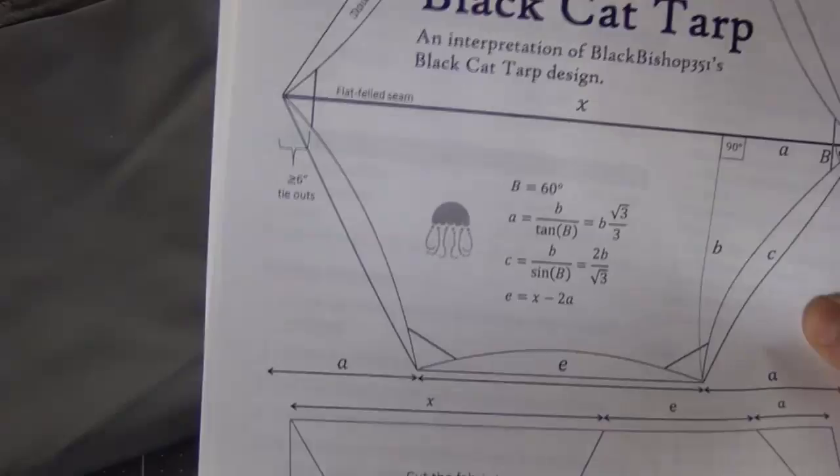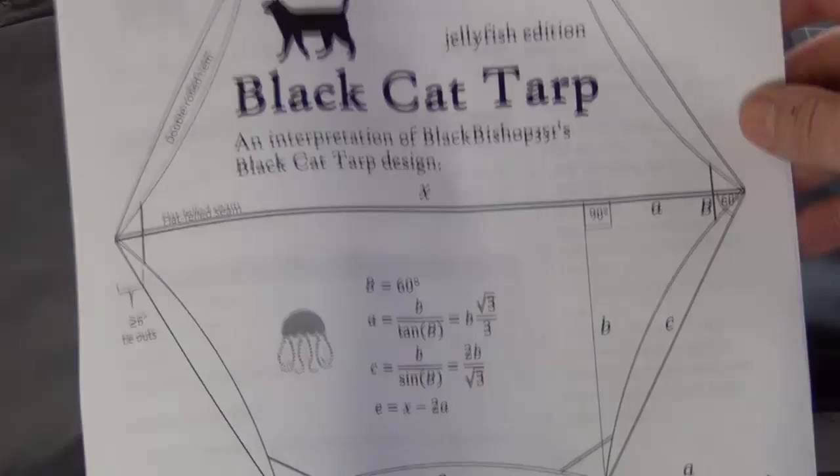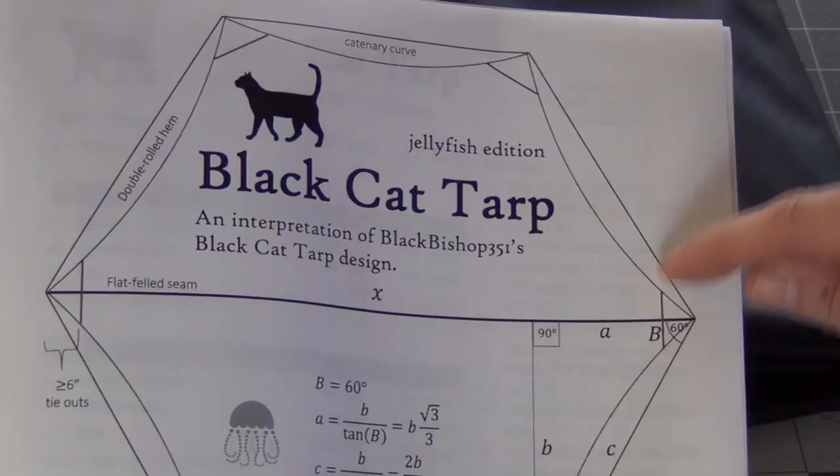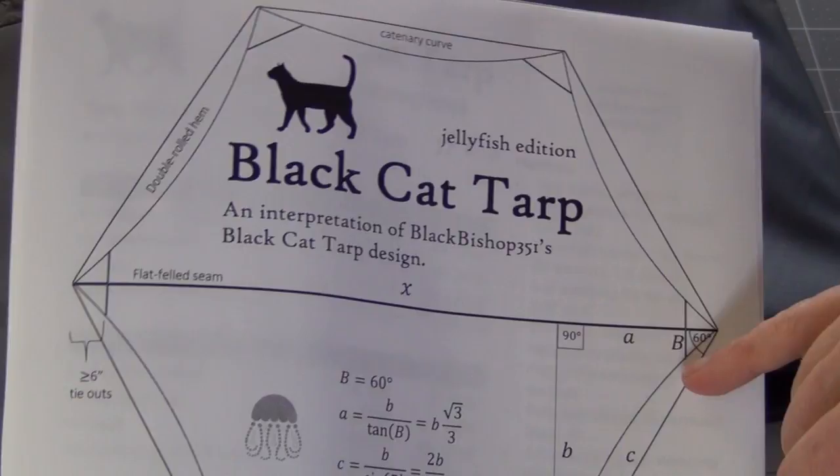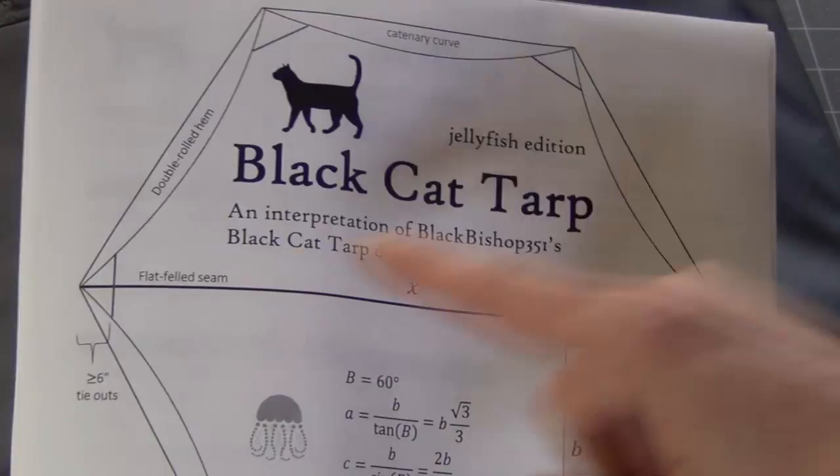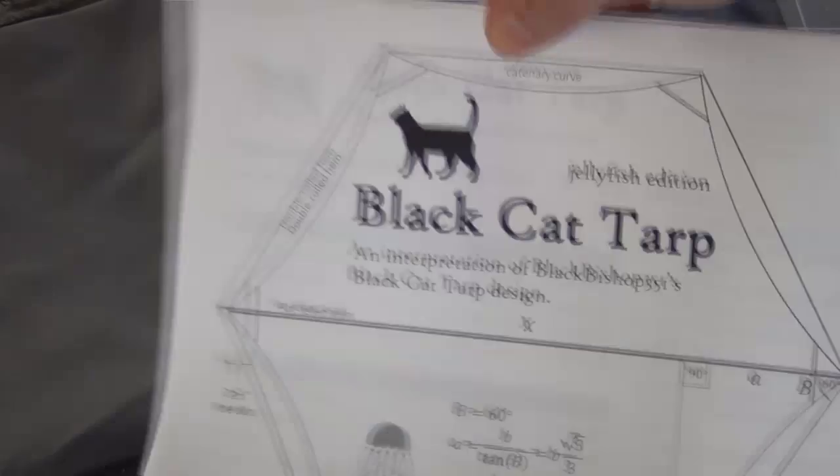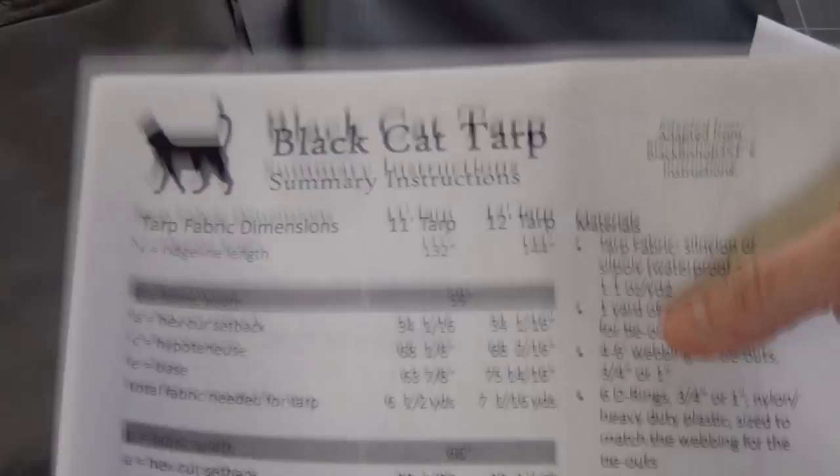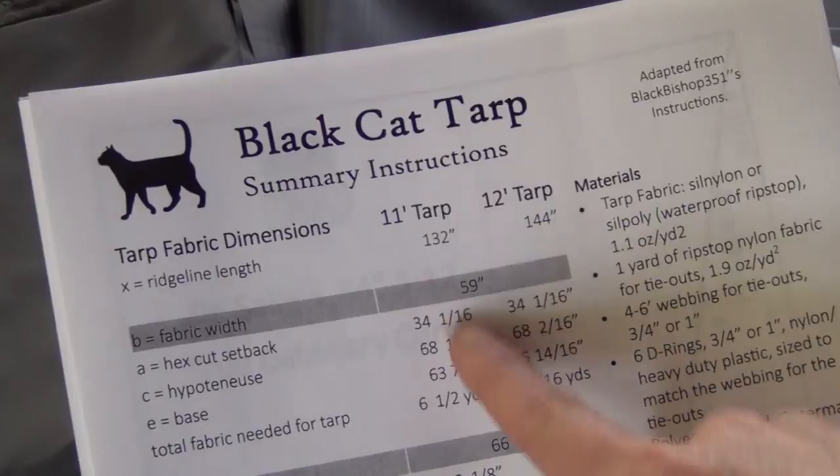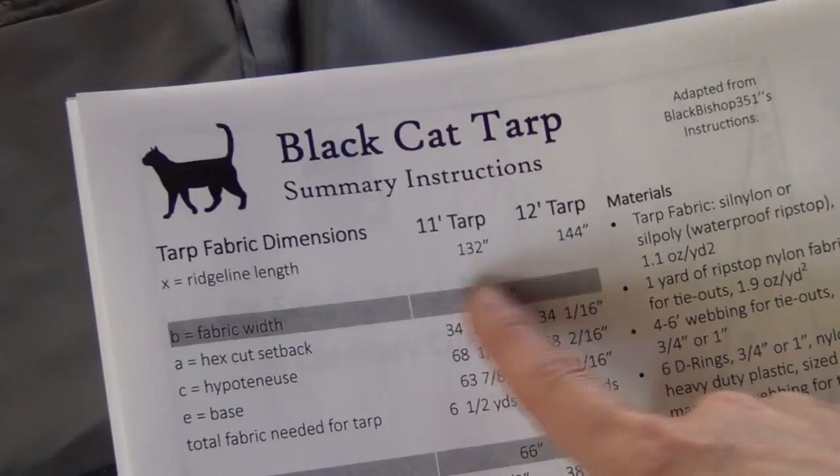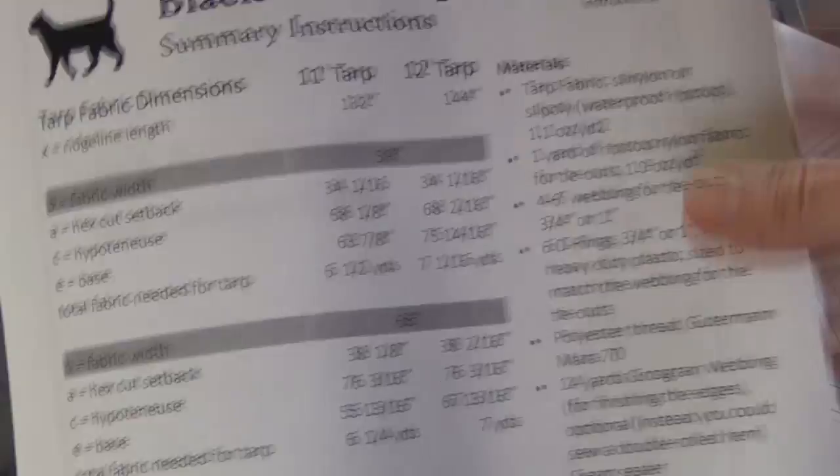So I will put this online and give you a link to where you can download the pattern if this makes sense to you. The black cat tarp is a hexagon, and this initial curve here is based on a 62 degree angle off the ridge line. The tarp that I'm going to be making is an 11 foot tarp, and the width of my fabric is 59 inches, so I'm going to be using this set of dimensions.